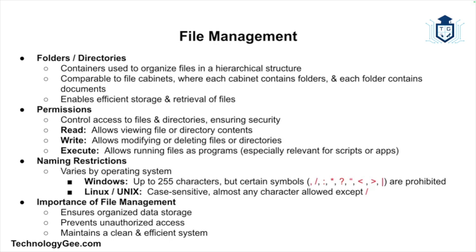Another aspect is naming restrictions — each operating system has its own rules for naming files and directories. In Windows, files can be up to 255 characters but cannot contain certain symbols. In Linux or Unix, file names are case sensitive and can contain almost any character except the forward slash. Proper file management is essential for ensuring organized data, preventing unauthorized access, and maintaining a clean system.